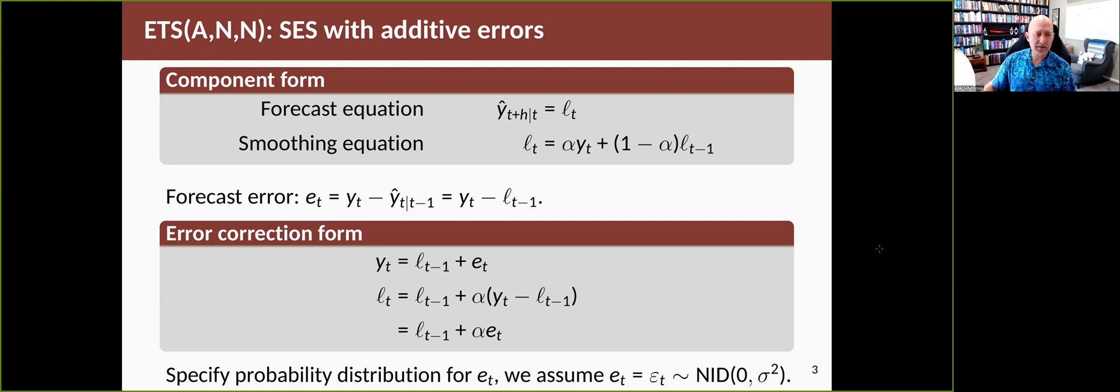And then we say, let's suppose the forecast error et has a normal distribution with constant variance, which are independent from time to time. So that stands for normal and independently distributed with mean zero and variance sigma squared. And to sort of denote the fact that we're actually assuming a distribution here, we'll change the notation from e to epsilon. And that very simple step changes everything because then instead of having equations that generate point forecasts, we now have equations that have stochastic properties.